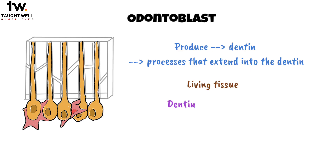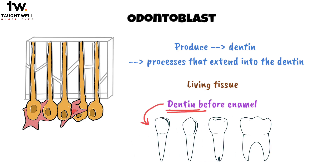Dentin begins to form just slightly before enamel, which is the outermost layer of the tooth. Because of this timing, dentin essentially shapes the overall form of the tooth, including the cusps, ridges, and the roots. It's like the framework that defines the final structure of a building before the outer walls are put up.